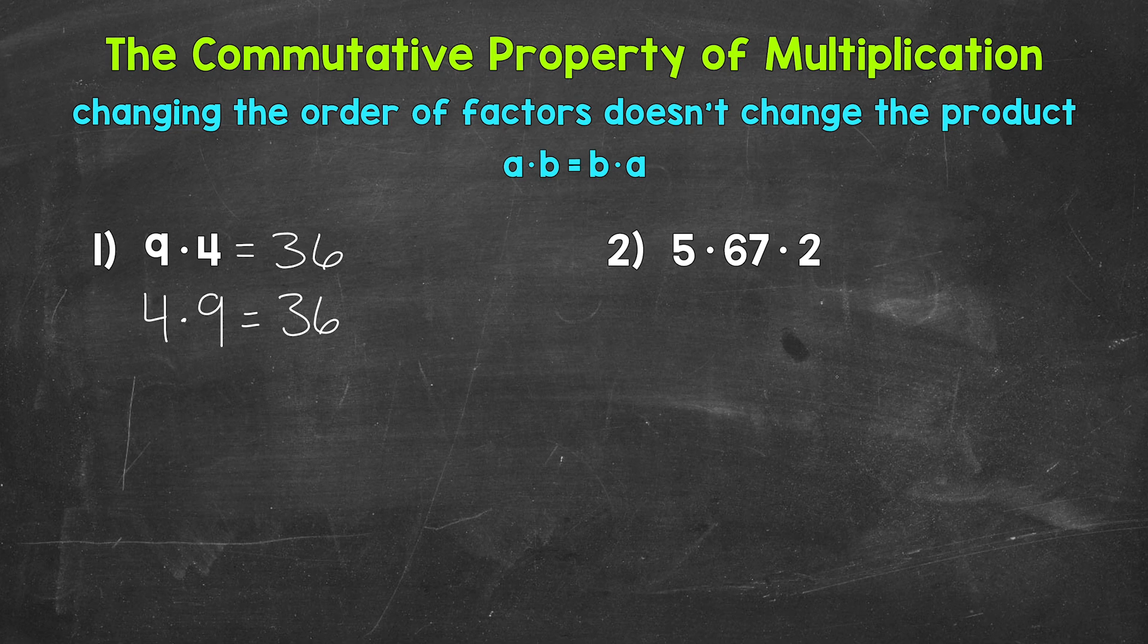Let's move on to number 2, where we have 5 times 67 times 2. We have 3 factors, 3 numbers being multiplied together. Now we can use the commutative property of multiplication to make this problem simpler to work through.